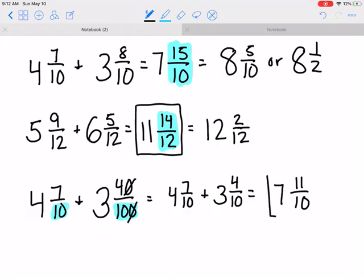So now I'm going to rewrite this problem: 4 and 7/10 plus 3 and now this is 4/10. And now I can add, 7 plus 4 is 11/10, and 4 plus 3 is 7. So now I have to change this and you would get 8 and 1/10.